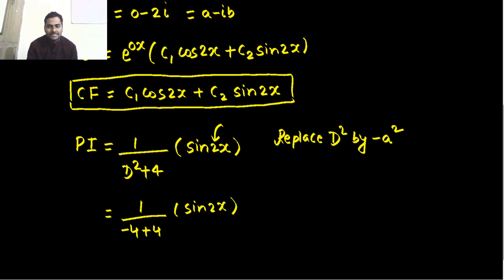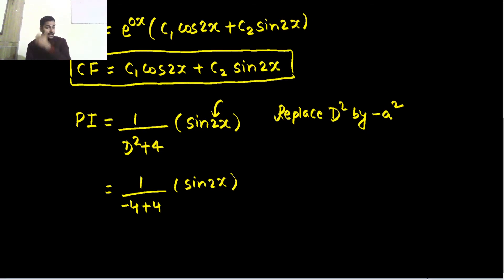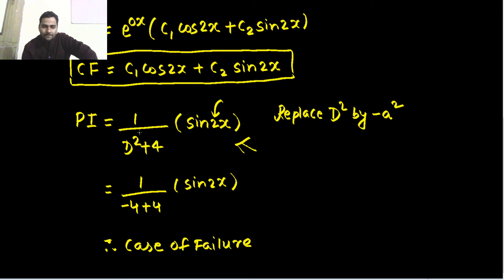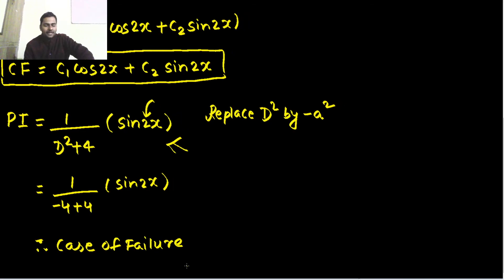As you can see, this is a case of failure — the denominator is becoming 0. What we do in this type of case: go back to the previous step and, if you get a case of failure, differentiate the function of D in the denominator with respect to D and multiply by one x outside that operator.